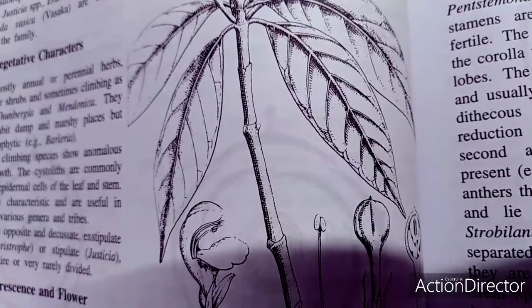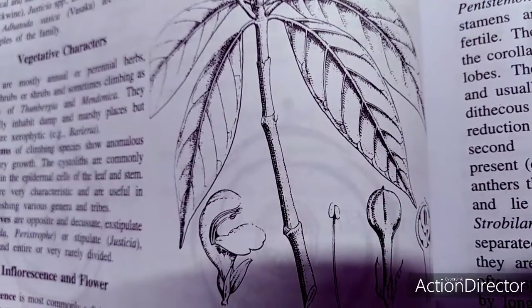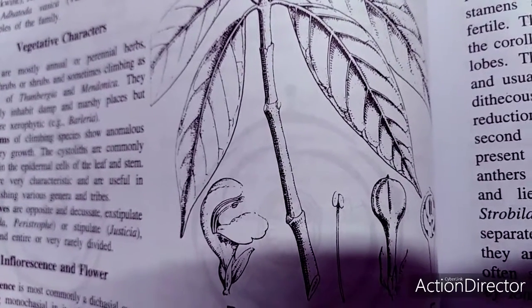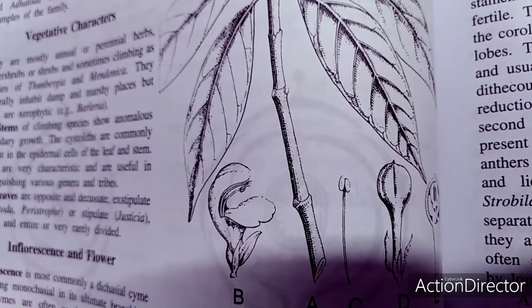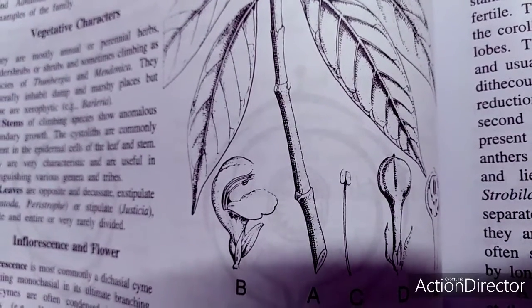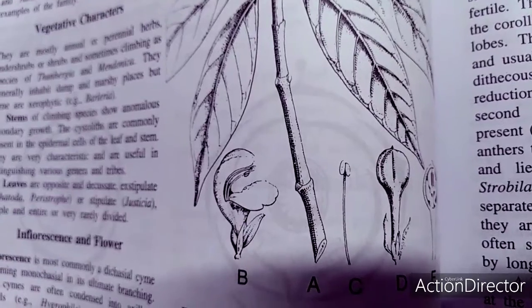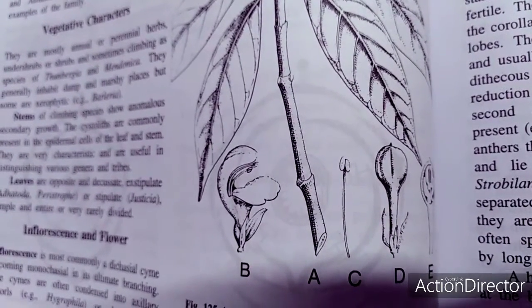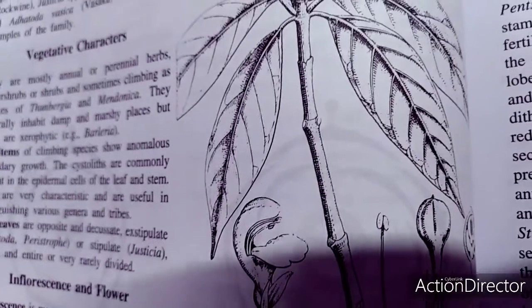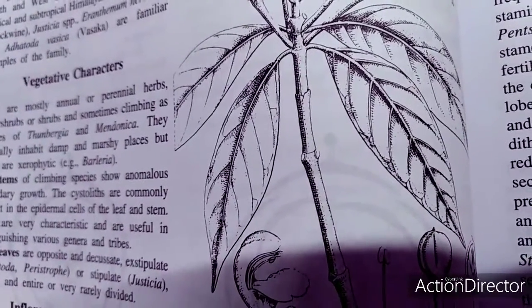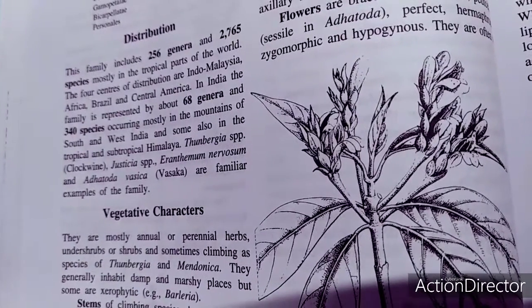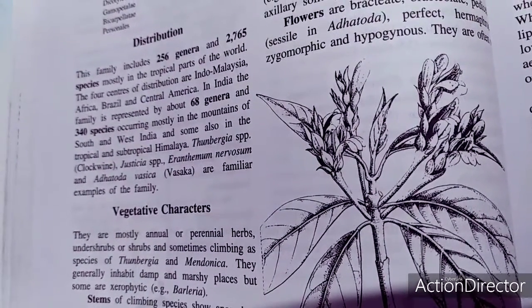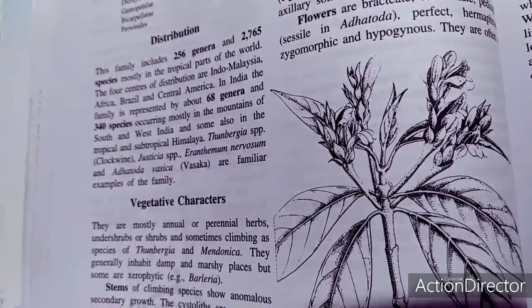Before discussing interesting aspects of this family: it is known as the Barleria or acanthus family. Adhatoda leaves and roots are used in bronchitis, and Barleria leaf and roots are used as anti-inflammatory agents. The family is derived from Scrophulariaceae and is homologous to Boraginaceae and Scrophulariaceae. Vegetatively, plants are annual or perennial herbs, undershrubs, or shrubs, sometimes climbing, as in Thunbergia and Mendoncia. They generally inhabit damp and marshy places.